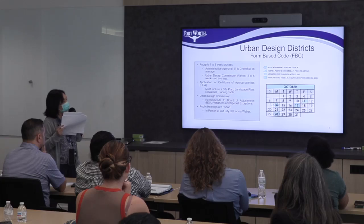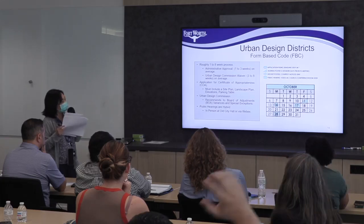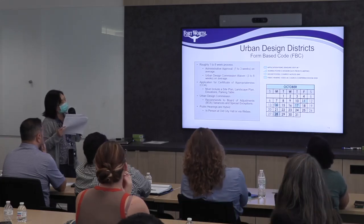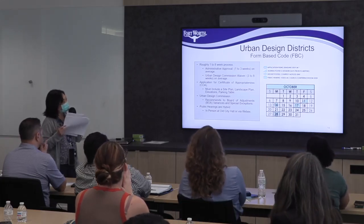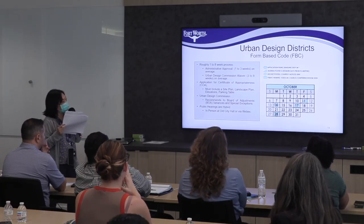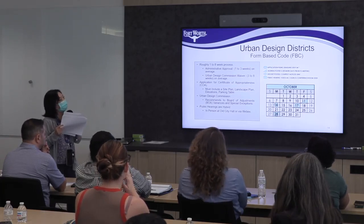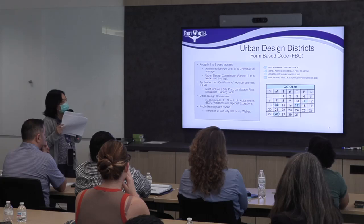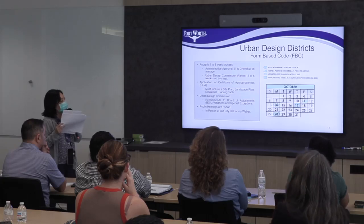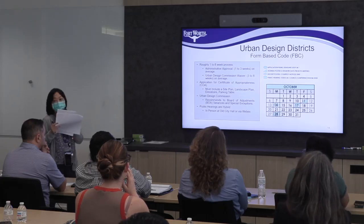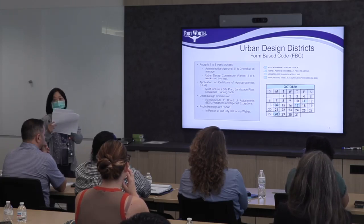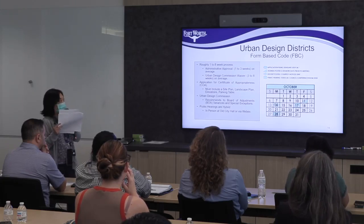Next is about the timeline of one application. Roughly, it's a one-to-eight week process for an administrative approval. Another type involves the Urban Design Commission — when you need a waiver, you need to go to the UDC, so it takes longer, like three to eight weeks.